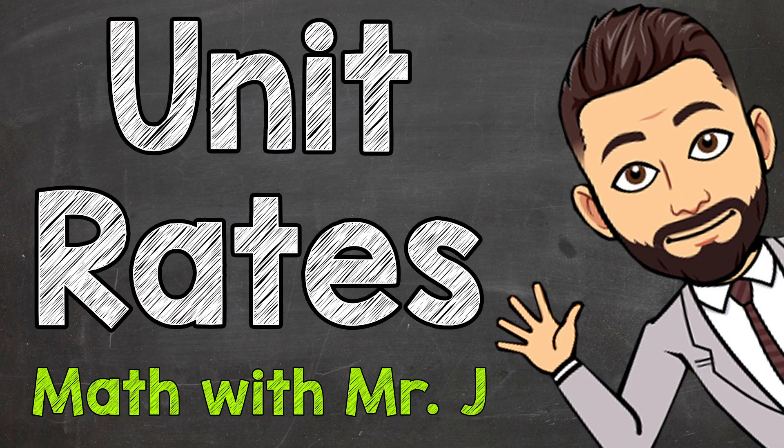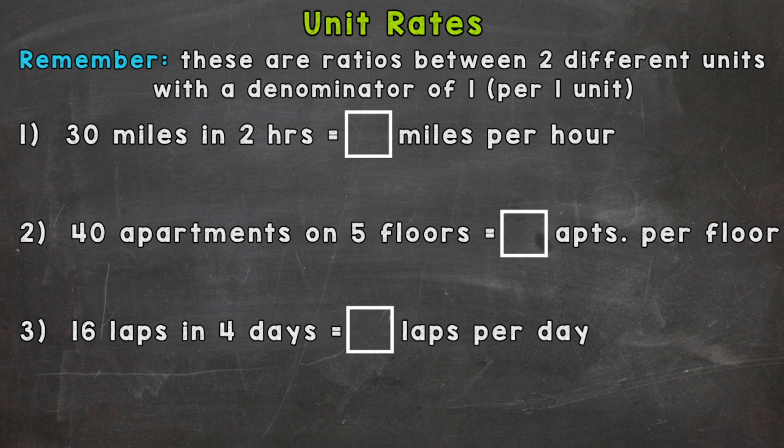Welcome to math with Mr. J. In this video I'm going to cover unit rates. A unit rate is a ratio between two different units and we have to get to a denominator of one. That's going to give us our per one unit. That might not make complete sense right now, but as we go through the three examples on your screen, you'll start to see what I mean by the per one unit.